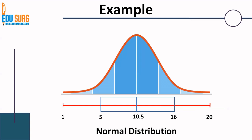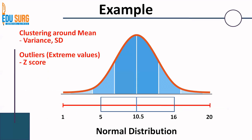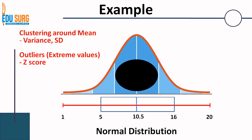Let us take an example of a normal distribution — the same example used in the five-point summary. If you have not seen that video, do have a look. If you are looking at clustering around the mean, you are looking at variance and standard deviation — how far the data is from the mean, how far a single value is from the mean. If you are looking at extreme values — the outliers marked by stars — that is where you look at Z-score. So: clustering around the mean → variance and standard deviation; outliers/extreme values → Z-score.